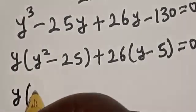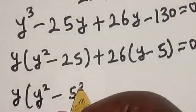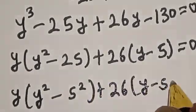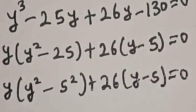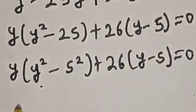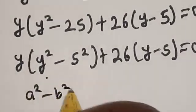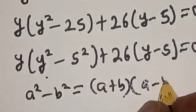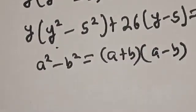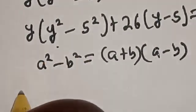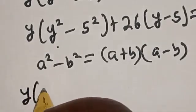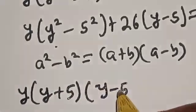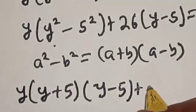This gives y times (y squared minus 5 squared) plus 26 times (y minus 5) equals 0. Remember the difference of two squares: a squared minus b squared equals (a plus b)(a minus b). So y squared minus 5 squared becomes (y plus 5)(y minus 5). Therefore we have y times (y plus 5) times (y minus 5) plus 26 times (y minus 5) equals 0.